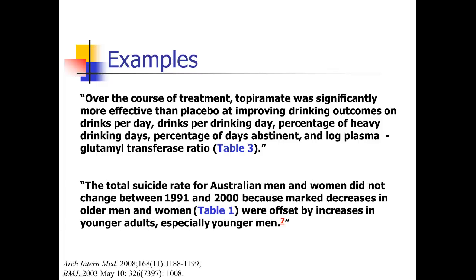Here's another example: 'The total suicide rate for Australian men and women did not change between 1991 and 2000 because marked decreases in older men and women were offset by increases in younger adults, especially younger men.' The table contains just a list of numbers broken down by gender and age. The author gives the high-level summary — no change overall, but opposing trends in subgroups — without stating all the individual numbers.